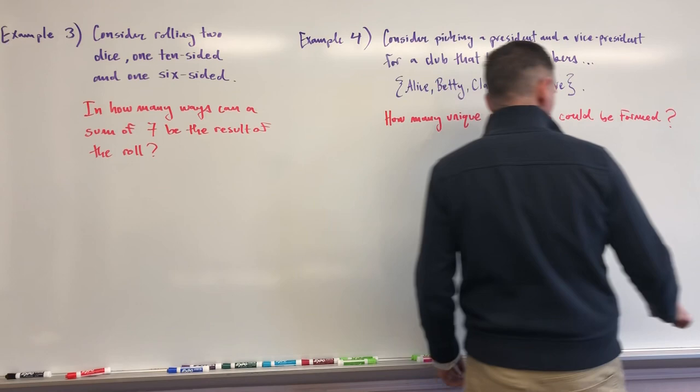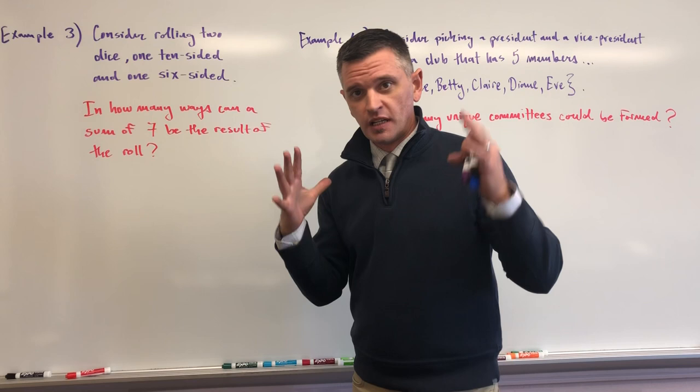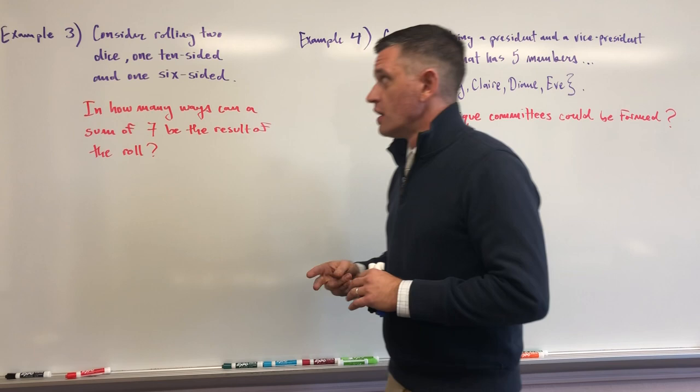Okay, part three — exciting conclusion to our epic Mr. Wells is in Boston saga. Last time when we finished, we looked at a product table, a contingency table that contained all the possible outcomes of rolling two six-sided dice. So now I want to look at two more unique dice.